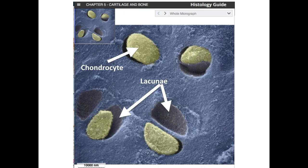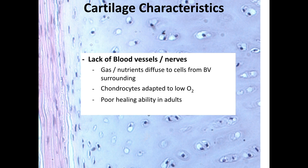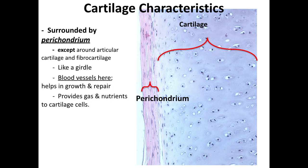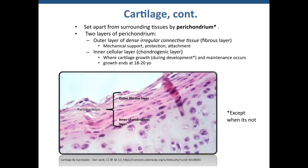Cartilage is connective tissue that is totally avascular — there are no blood vessels within the cartilage tissue itself. This is key when we talk about the poor healing ability in adults when cartilage is damaged. The chondrocytes within the matrix have very low activity and are adapted to low oxygen. The oxygen and nutrients they do get diffuse through that watery matrix from the surrounding perichondrium, which is where the blood vessels are located. The perichondrium has two layers: the inner cellular layer containing chondroblasts, which assists in growth and repair, and the outer fibrous layer, which acts like a girdle to resist outward expansion when the cartilage is subject to pressure. It is a dense irregular connective tissue and also helps attach cartilage to surrounding structures.